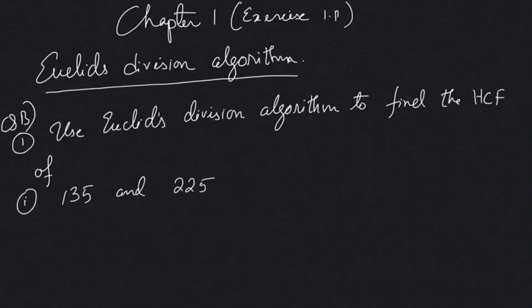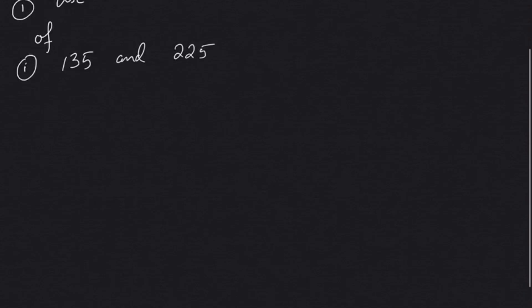Friends, today we are going to do some problems from Chapter 1, Exercise 1.1, Euclid's Division Algorithm. The question states: use Euclid's division algorithm to find the HCF of 135 and 225. Now here, 225 is greater than 135.